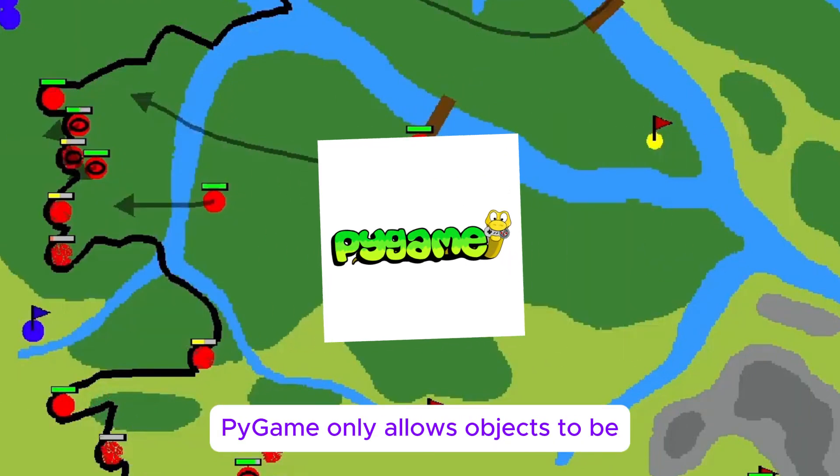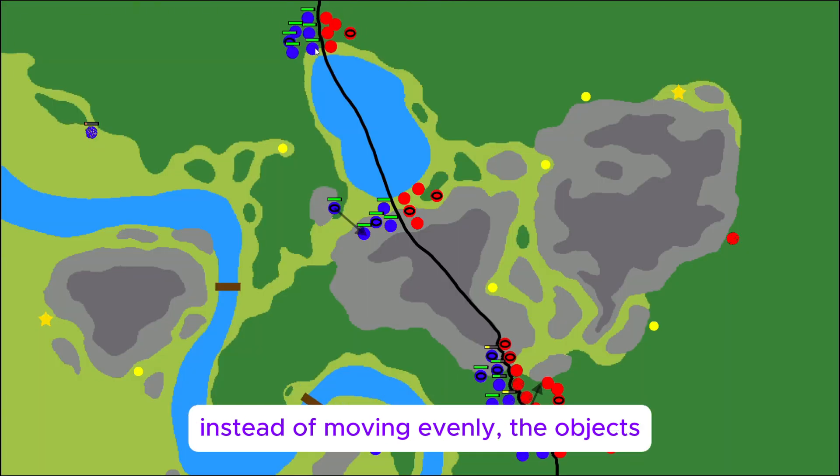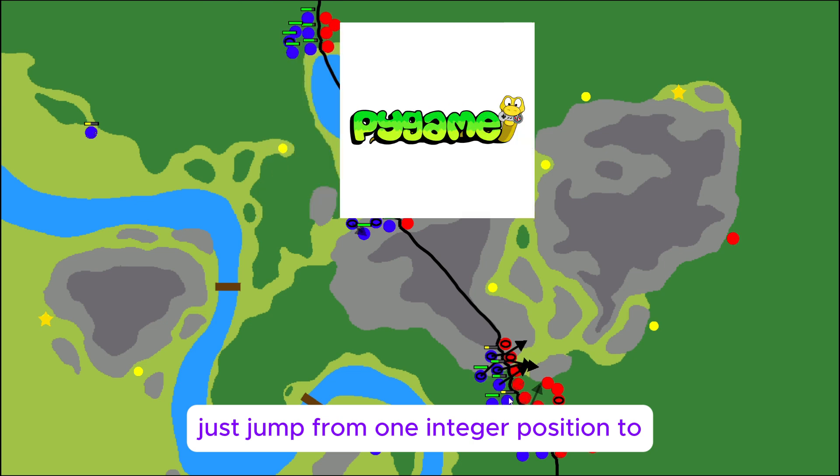Well, it happens that PyGame only allows objects to be positioned at integer coordinates. So instead of moving evenly, the objects just jump from one integer position to another.